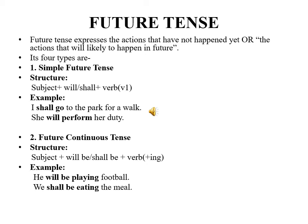Now, second type of future tense is future continuous tense. Its structure is subject plus will be or shall be plus verb fourth form, that is ING. Example, he will be playing football. We shall be eating the meal.